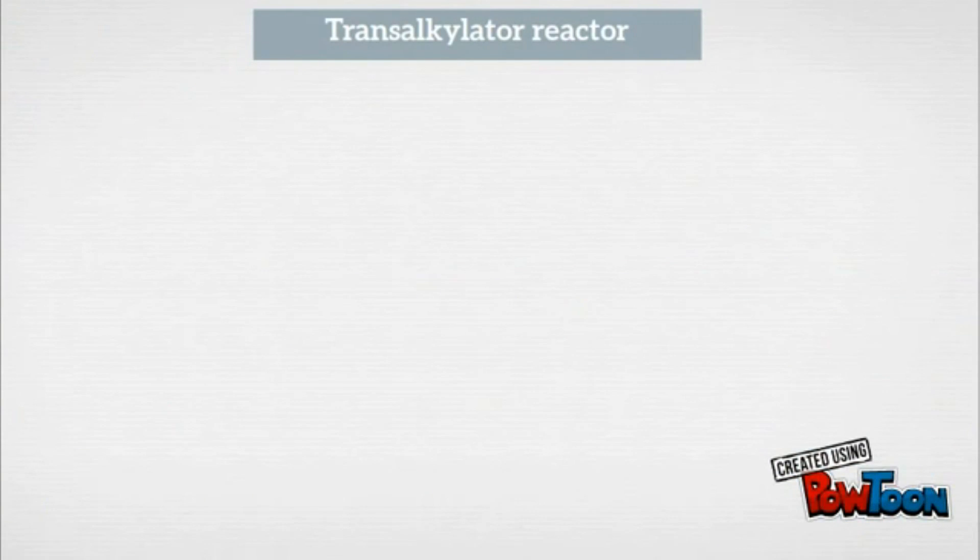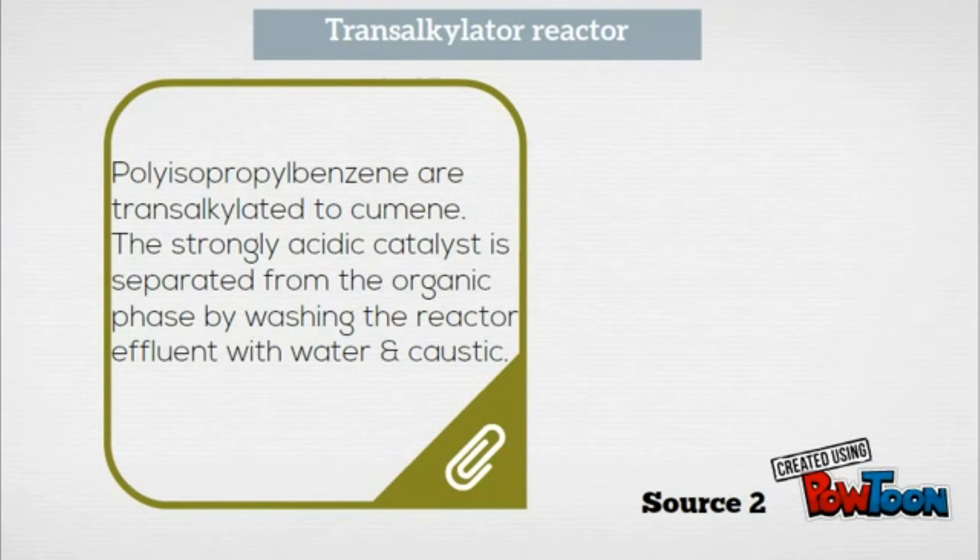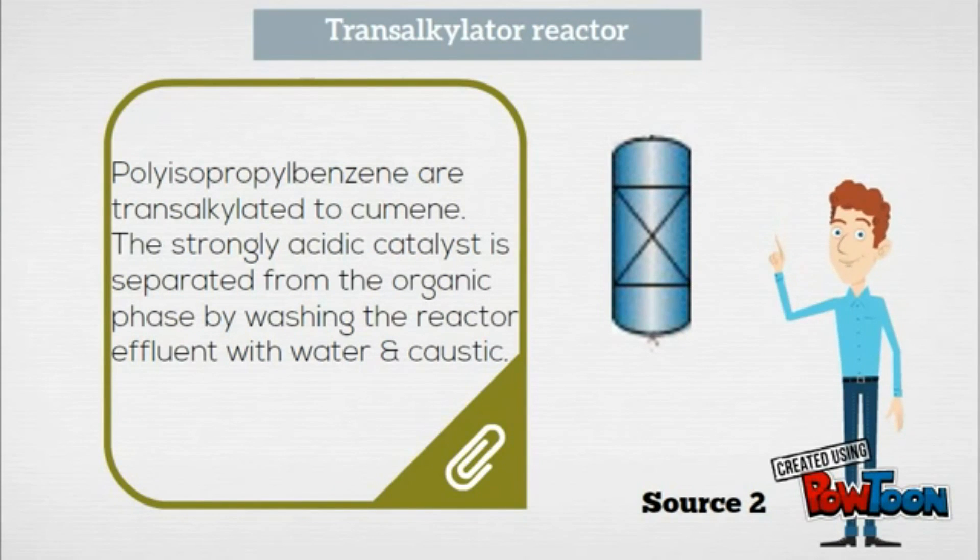The effluent from the alkylation zone is combined with recycled polyisopropylbenzene and fed to the transalkylation zone, where polyisopropylbenzene is transalkylated to cumene. The strongly acidic catalyst is separated from the organic phase by washing the reactor effluent with water and caustic.